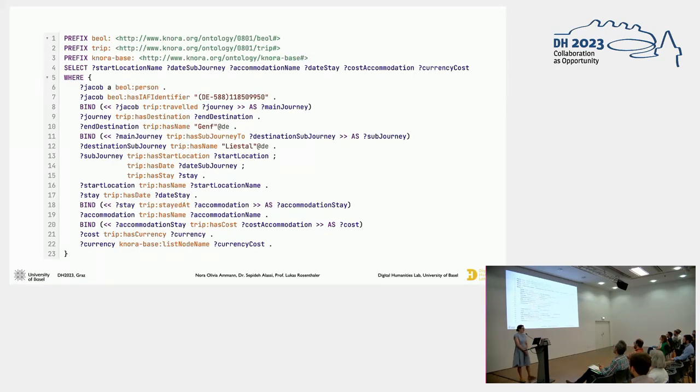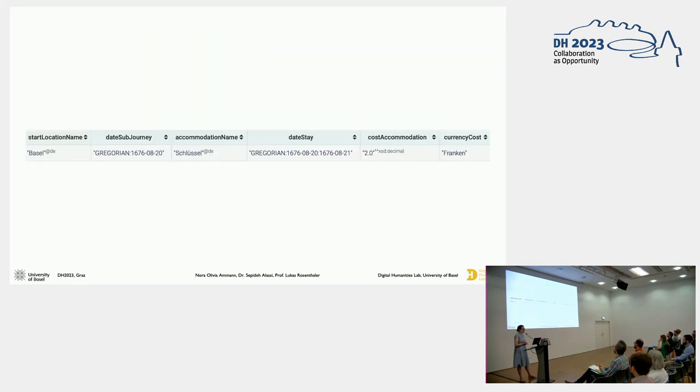And here you would see the query, which would return the information about his stay. As you can see, it's quite a simple query. With the bind function, we can find these RDF star triples as variables and then further use them in next query triples. And here you would see the results of that query.